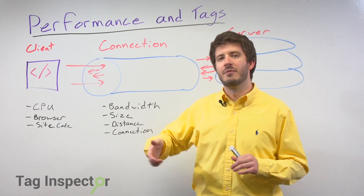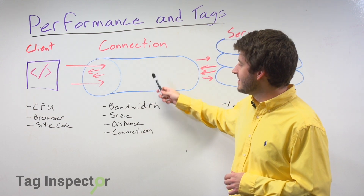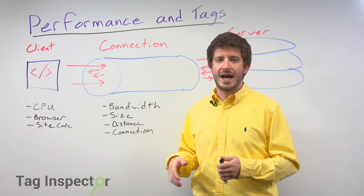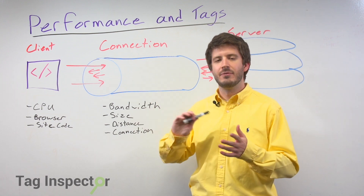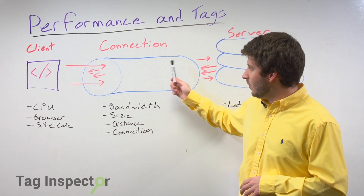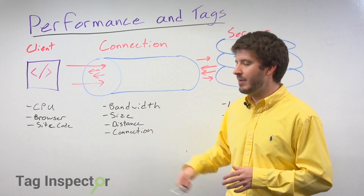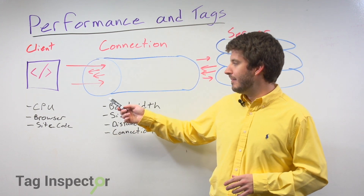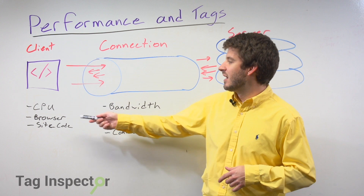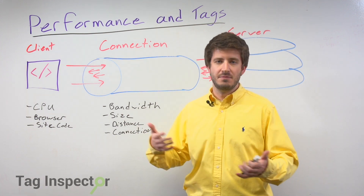The second piece with the connection is bandwidth. What is the size of the requests, and what type of internet connection do most of your users have? There's a smaller limit to the amount of information that can be sent and received if your users are on a 3G connection versus good Wi-Fi. If you only have a couple hundred kilobytes of bandwidth to work with for your site to load in a given timeframe and a couple of your tags are taking up 50% of that, that's a gigantic weight and it's going to cause your site to perform more poorly.